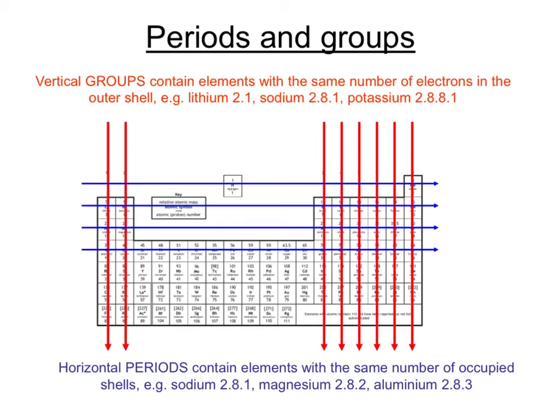In summary then, the vertical groups contain elements with the same number of electrons in the outer shell. For example, lithium and sodium and potassium all have one in their outer shell. The groups are shown in red. And then we've got the horizontal periods. These contain elements with the same number of occupied shells. For example, sodium, magnesium, and aluminium have all got three occupied shells and are all in the same period.